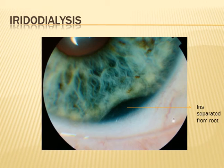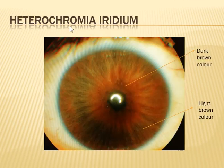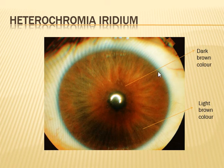Whenever there is iridodialysis, there is always a risk of complications like glaucoma. This is a very different eye — the color of the iris is not uniform. There is hypopigmentation of the iris, which is light brown in color, and the central area is more darkly pigmented — dark brown. This is called heterochromia iridium: 'hetero' means different, 'chromia' means color, so the color of the iris looks different in the same eye.